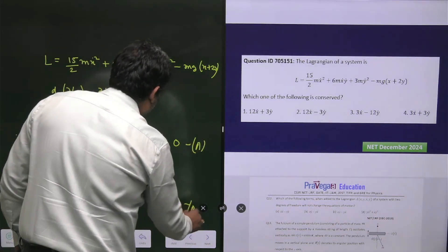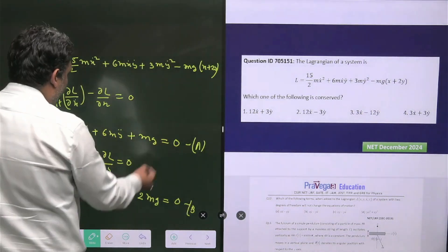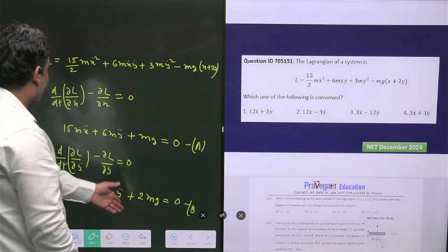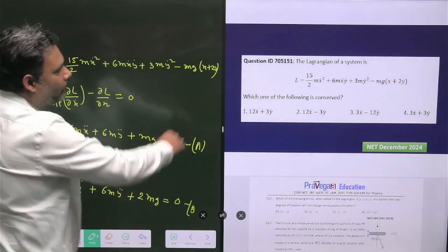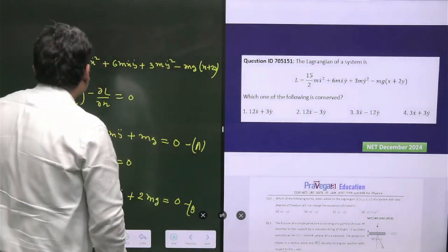We'll multiply this equation with 2 and then subtract, such that mg will cancel out. We can see there's no role of mg, so we have to remove mg from our calculation.